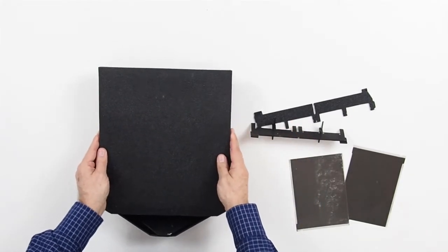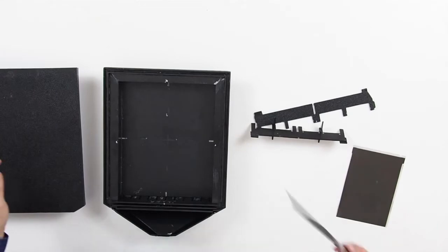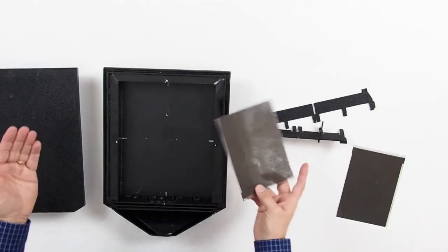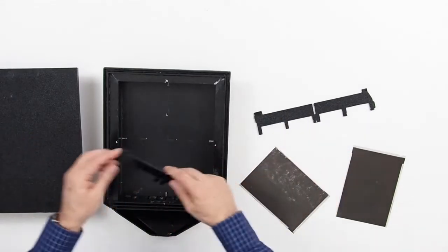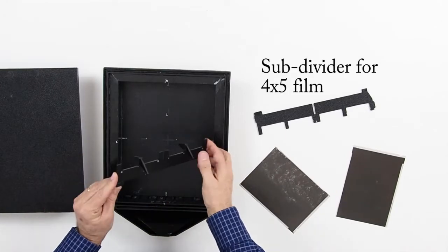For smaller film formats like 5x7, there are two ways you can load this. The divider has hold down tabs mounted to it.